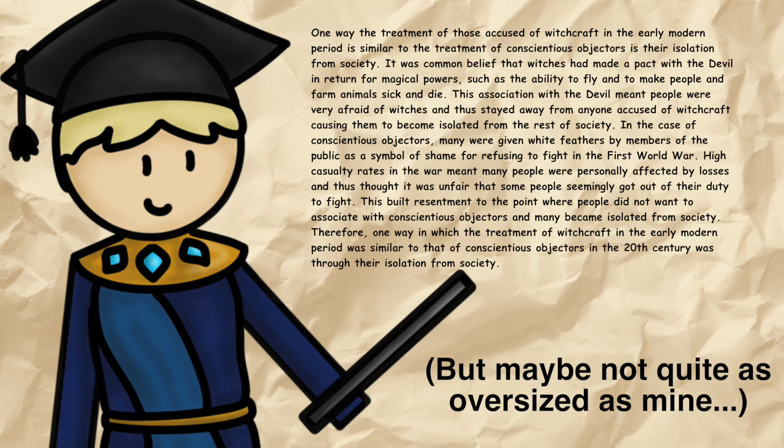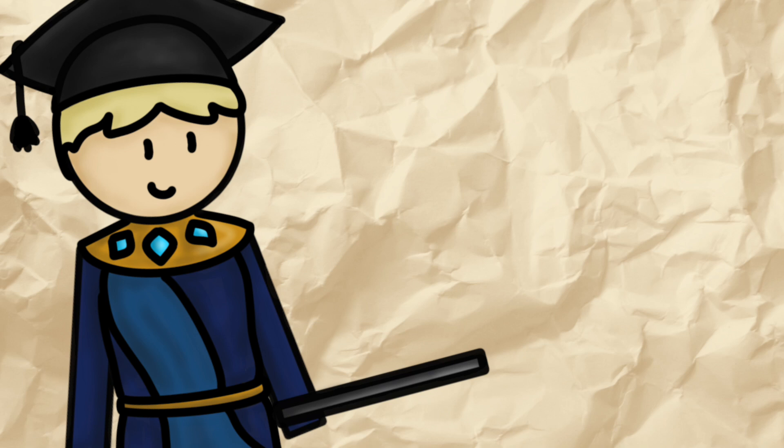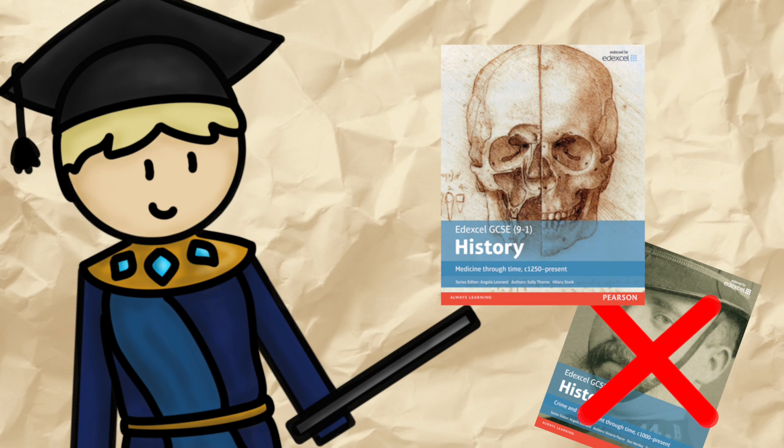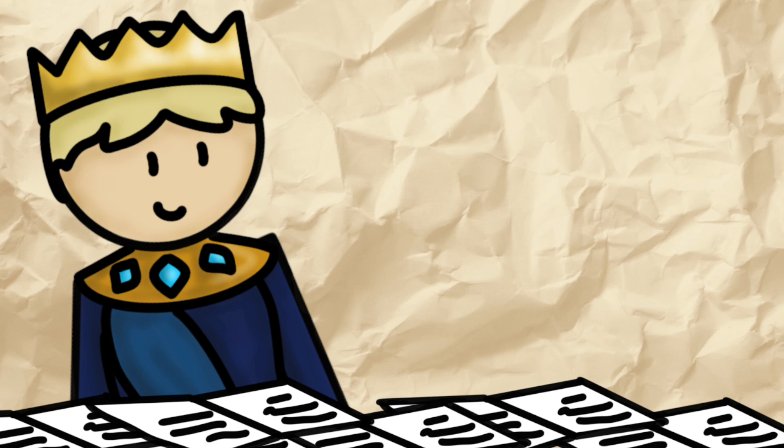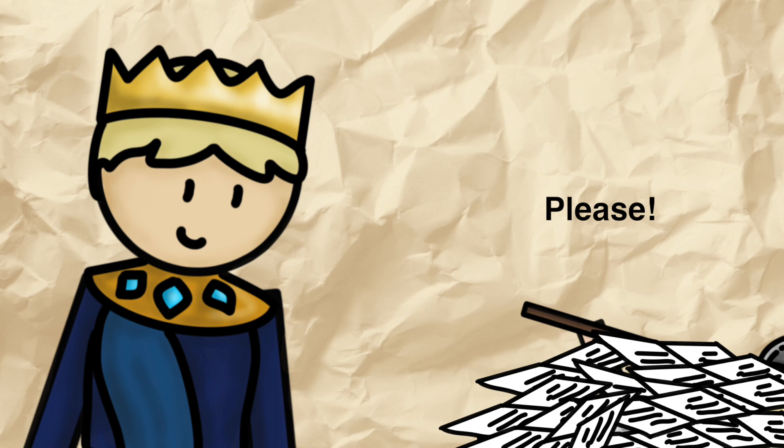It's important to reiterate that this structure should work no matter what topic. So, say for instance you're doing medicine through time and not crime and punishment, this structure will work for you in your paper 1, question three. Now all I can recommend is that you go away and practice. Go and write as many answers as you can, and hassle your teacher, forcing them to mark your answers until you get 4 out of 4 every time. That's what I did, and I got grade 9. So it must work.